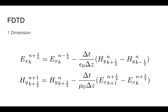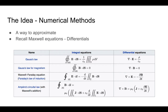So what is FDTD? In one dimension, we can get two equations for both electrical field and magnetic field. I will talk about how it was derived a little later. But on this slide, it's the simplest form — it only takes one dimension, and we actually have three dimensions. So how do we derive it? The core idea behind the FDTD method is numerical methods.